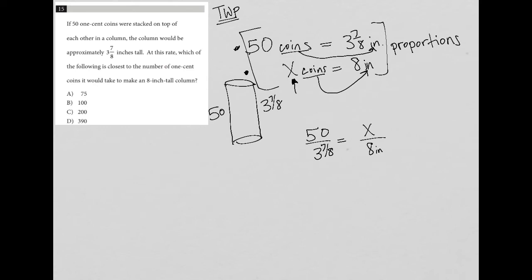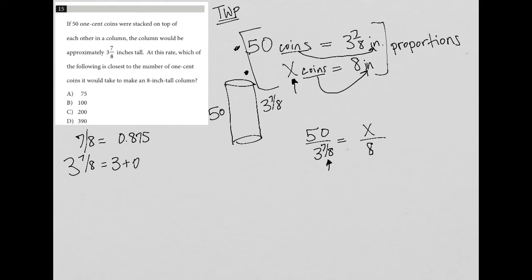I don't actually need the units at all here. The next thing I'm going to do is deal with the seven eighths — I don't like a mixed number when I'm trying to do math, especially on this test. So I'll figure out the decimal version of seven eighths. When I put seven eighths in my calculator, I get 0.875. So three and seven eighths equals three plus 0.875, which is 3.875. I'll replace that in the proportion: 50 over 3.875.